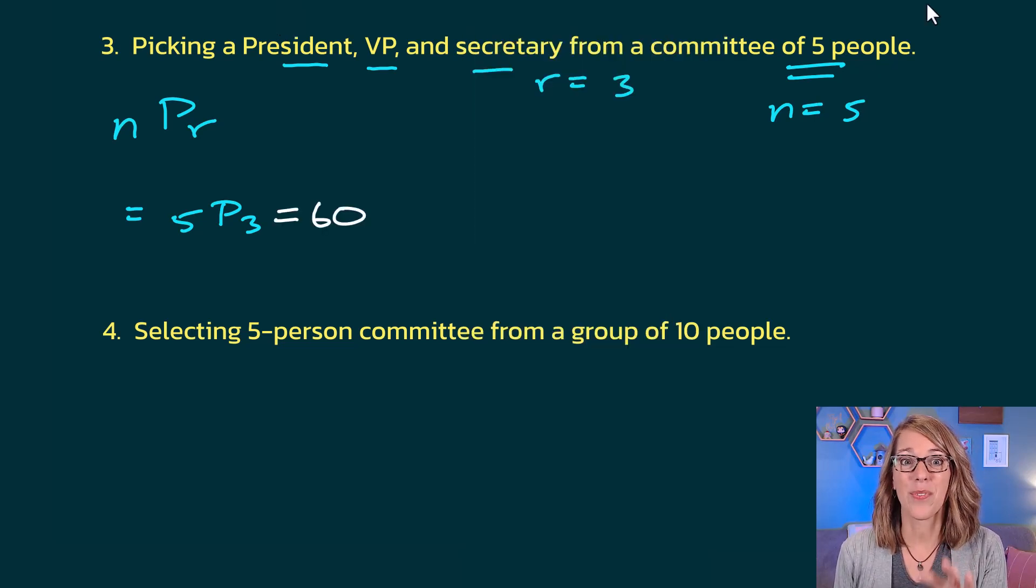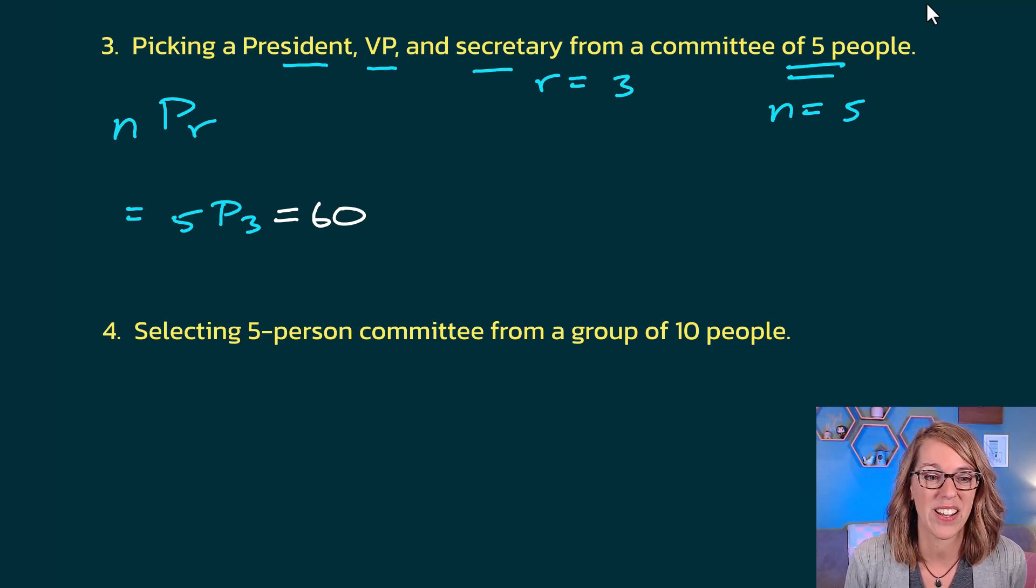So if you were correct, and number 3 was a permutation, chances are good that number 4 is going to be our combination. In number 4, we're picking a 5-person committee from a group of 10 people. I don't care what their positions are. I don't care where they sit. Order does not matter. So this one's going to be a combination, so NCR. N is equal to 10, and R is equal to 5.